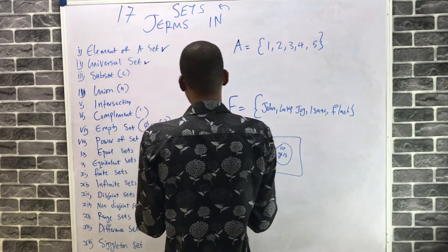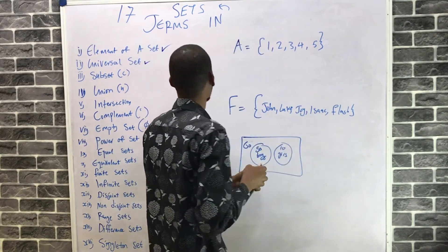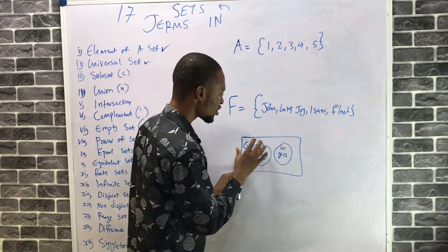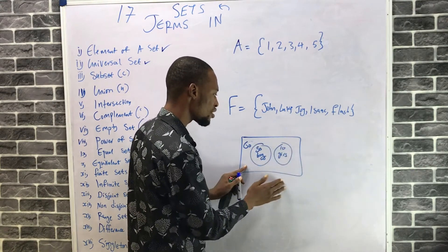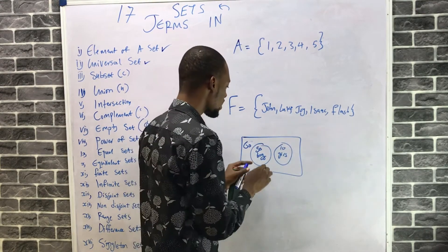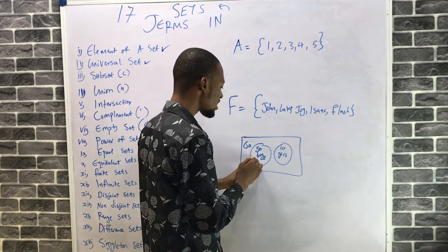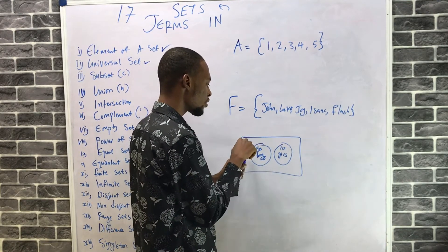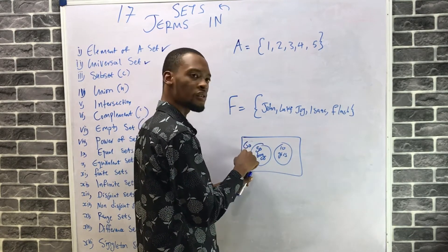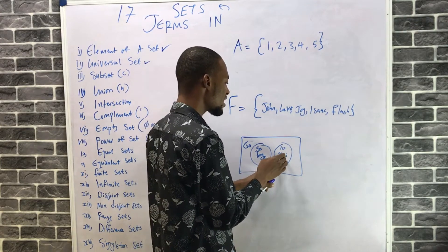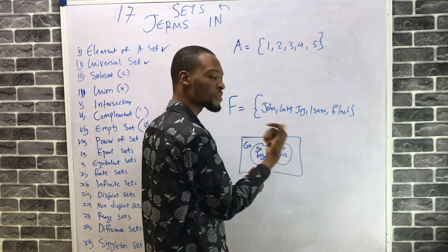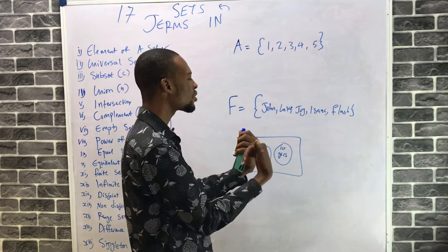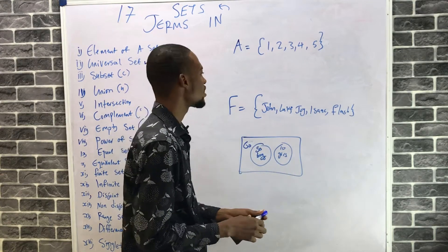Then we have subsets. The universal set is the total number of students in the class. The 50 boys are a subset of the students, and the 10 girls are a subset of the total students. So subsets are under universal sets.